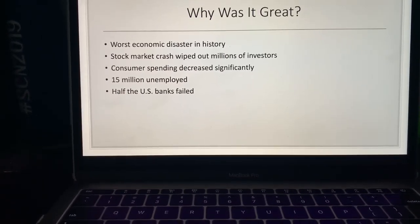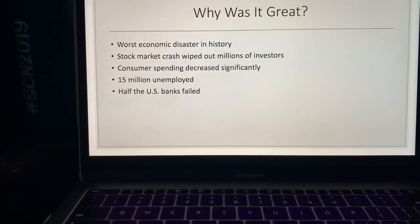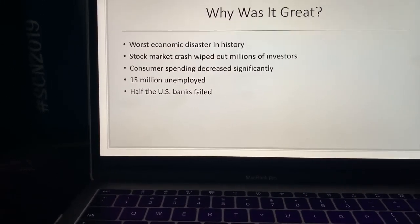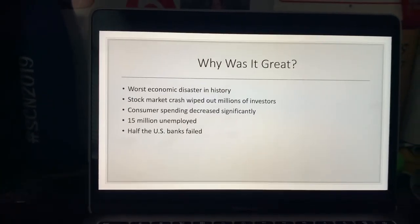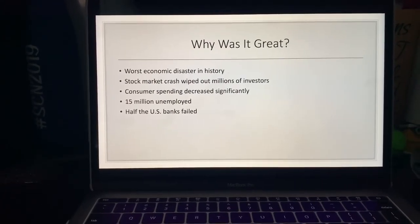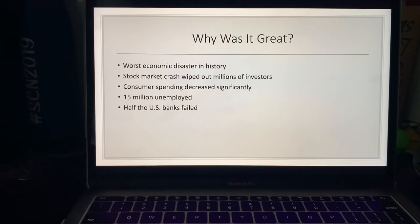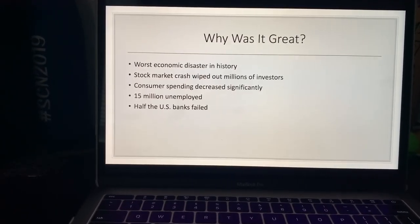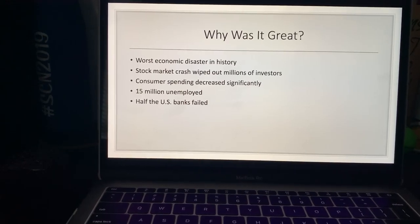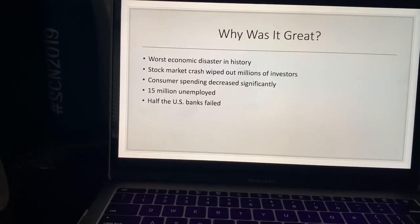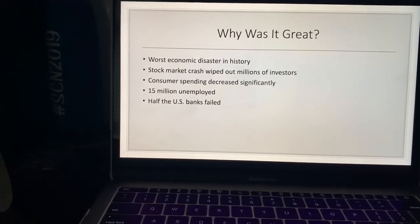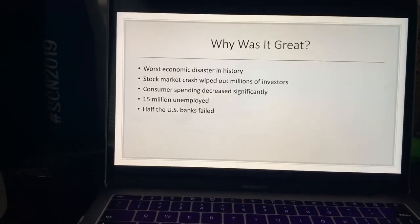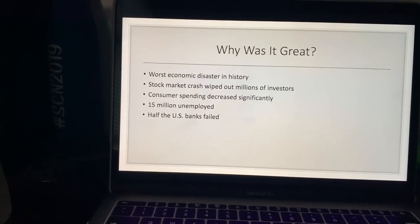Why do we call it the Great Depression? What was so great about it? It was the worst economic disaster in history — the biggest and the worst — and the effects hurt so many people in so many ways. The stock market crash itself wiped out millions of investors. This was kind of the first phase of the Great Depression: the stock market crashing. At this time, people had put so much money and faith into the stock market that when it crashed, they lost every dollar they had made and went bankrupt — millions and millions of dollars lost.